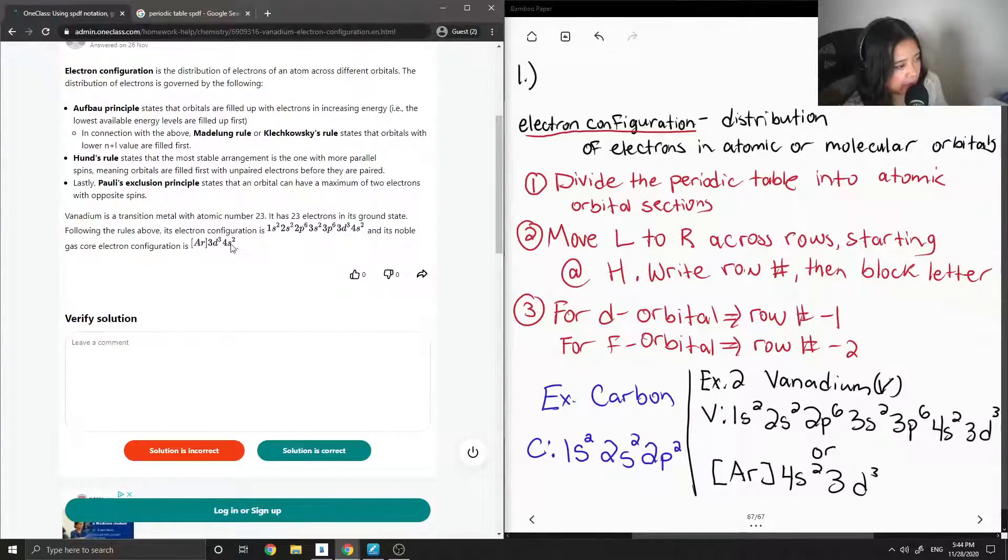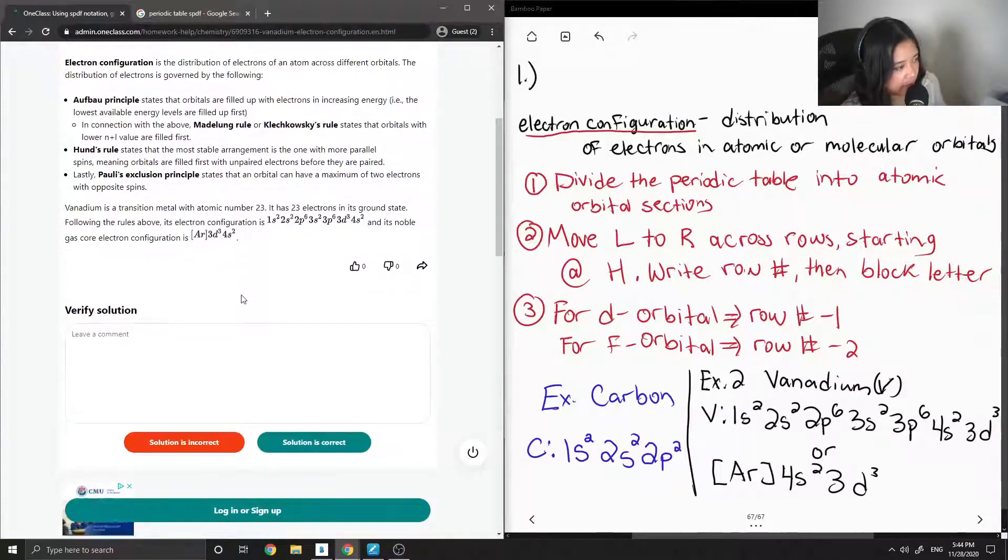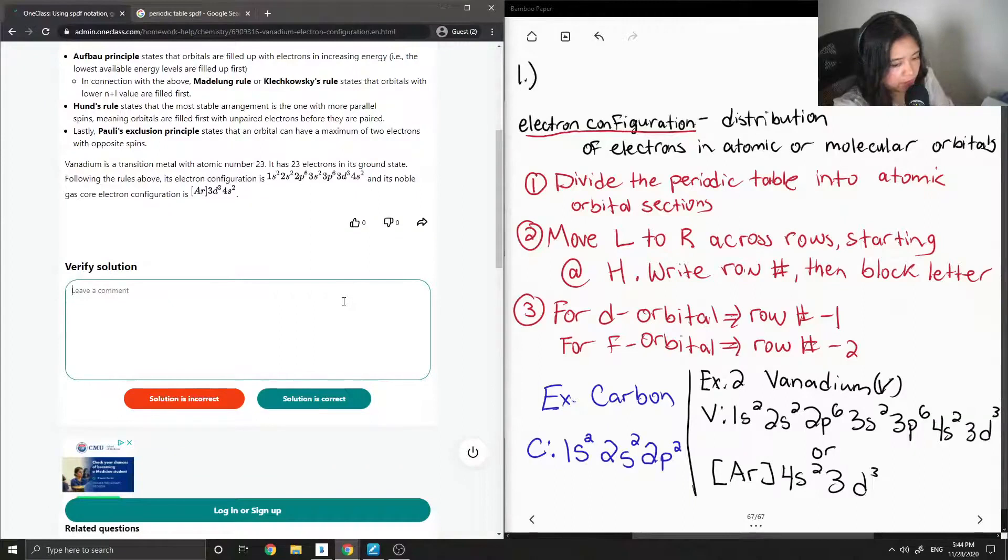So some people write the 4s2 before the 3d3, but I've seen it being written as both ways. But this solution is correct.